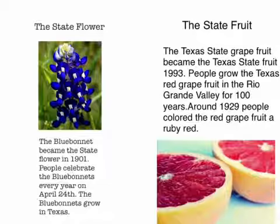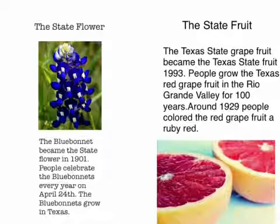The state fruit. The Texas state grapefruit became the Texas state fruit in 1993. People grow the Texas red grapefruit in the Rio Grande Valley for 100 years. Around 1929, people colored the red grapefruit a ruby red.